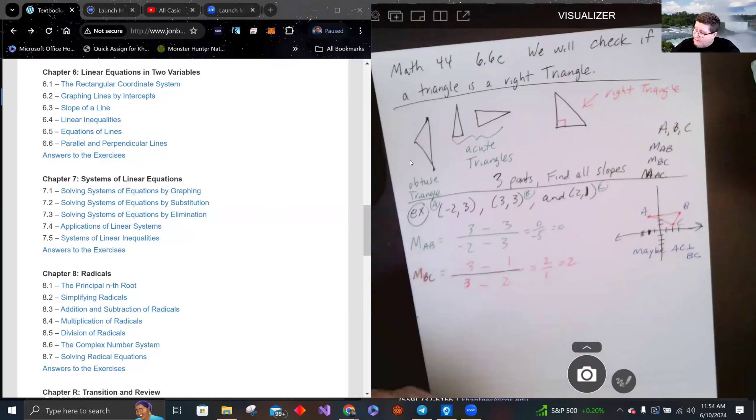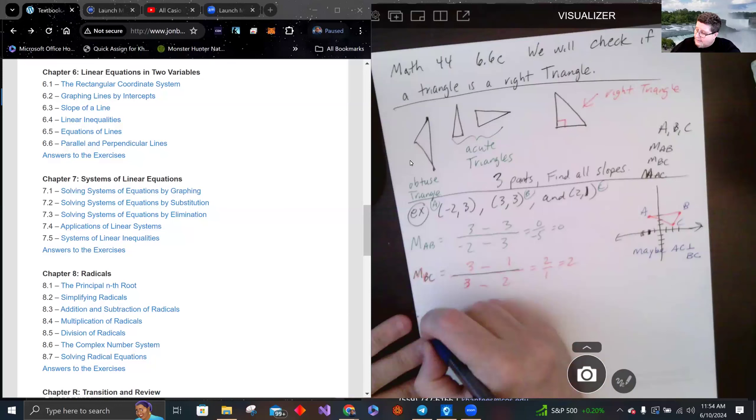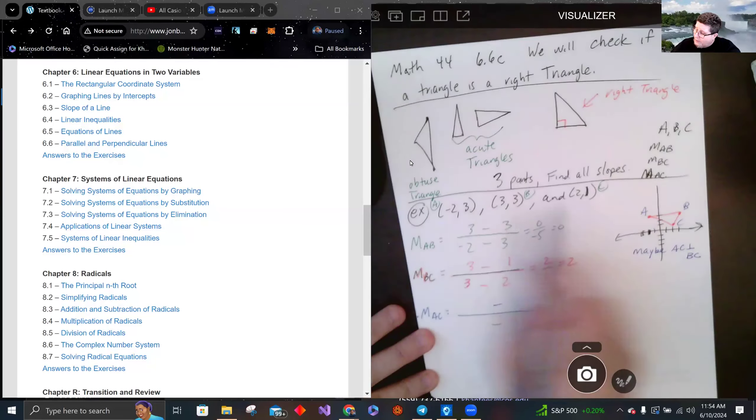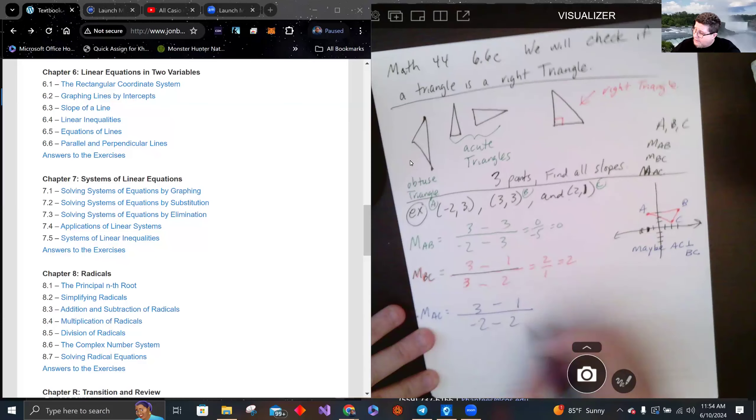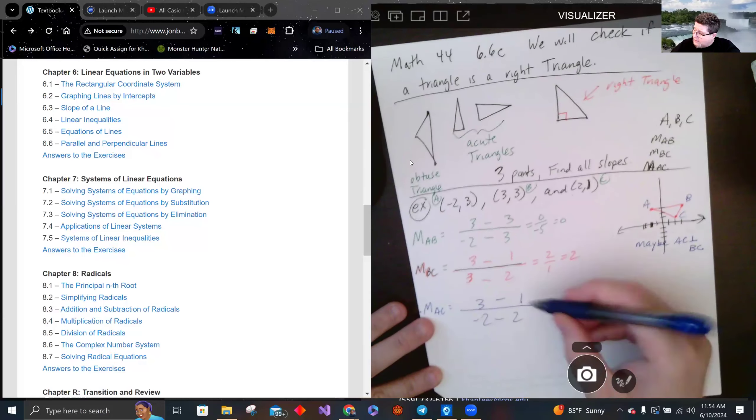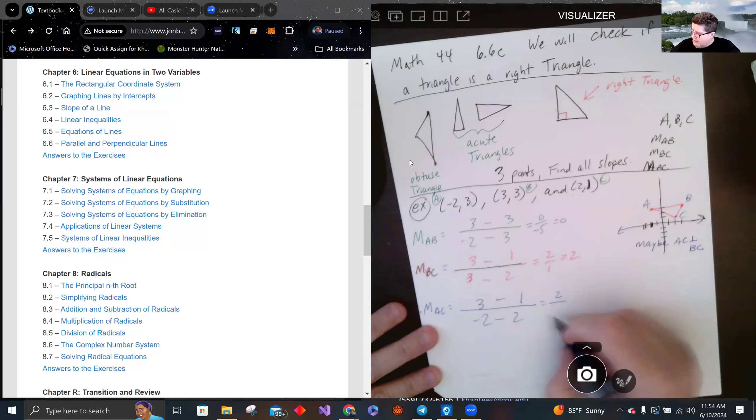And finally we will do m_AC: (1-3)/(-2-2), 2 over negative 4 is negative one-half.